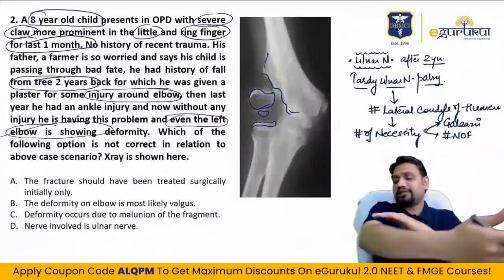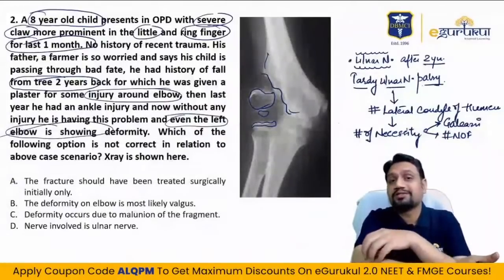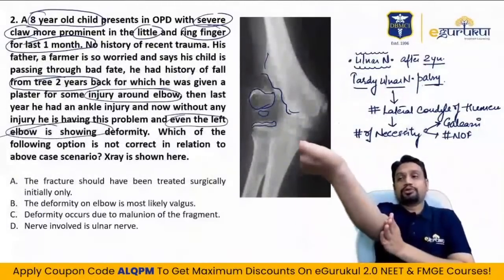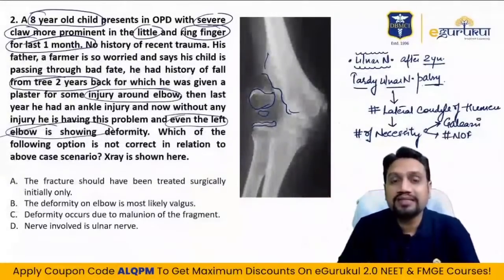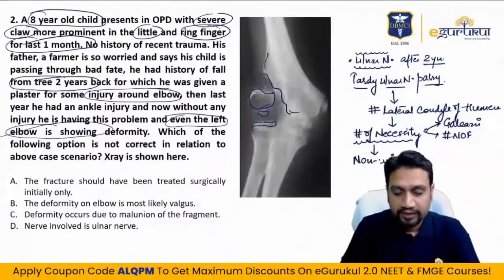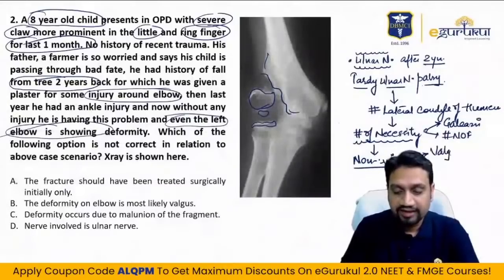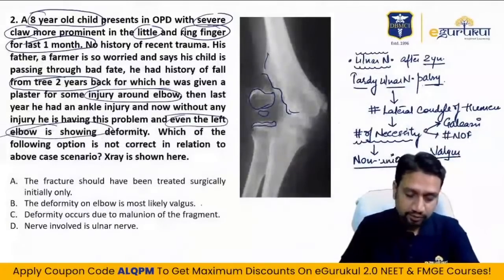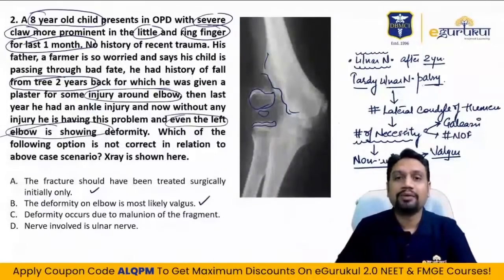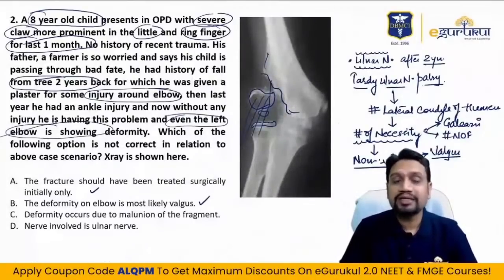Valgus occurs because the lateral side will not grow as it is not attached to the parent bone. The medial side keeps growing, causing deformity. This is because the fracture of necessity was not treated surgically, leading to non-union, which leads to cubitus valgus deformity. Deformity due to malunion of the fragment is incorrect — it is non-union, not malunion.